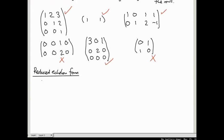So a matrix is in reduced echelon form if three things hold. First, it's in echelon form. Second, all the leading entries are equal to one.